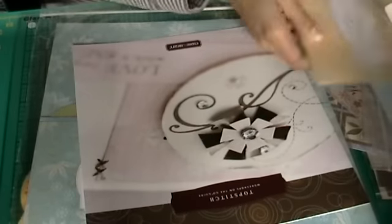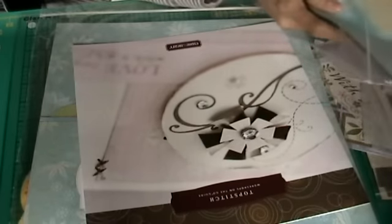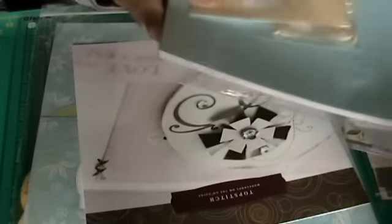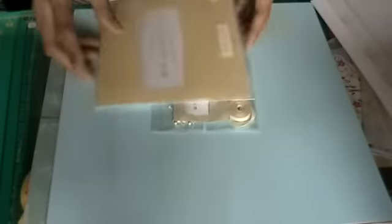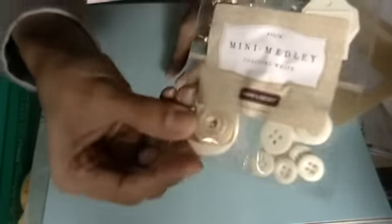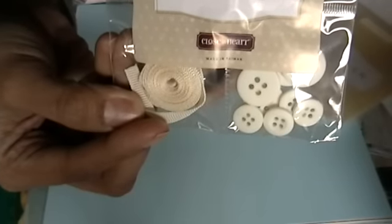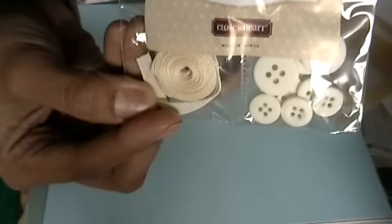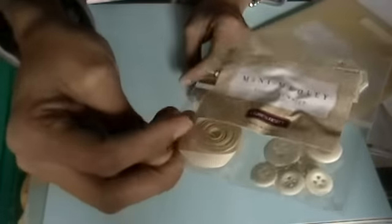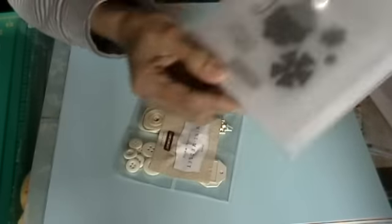So that comes in the kit and then also each of the kits, aside from the paper pack, you get some fun little goodies. One of them this month is the Colonial White mini medley. There's buttons in there, metal tags, some brads, and then looks like some ribbon here.